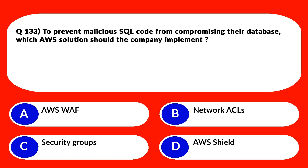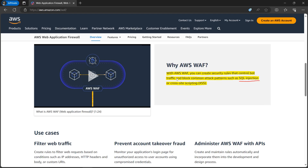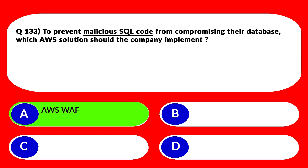Malicious SQL code means SQL injection. Whenever you see keywords like SQL injection or cross-site scripting in a question, think about AWS Web Application Firewall, also known as WAF, and you should get your answer. Hence we'll keep option A and reject the rest. It's written: with AWS WAF, you can create security rules that control bot traffic and block common attack patterns such as SQL injection or cross-site scripting, also known as XSS. That's what is required, so we'll lock option A as the correct answer.